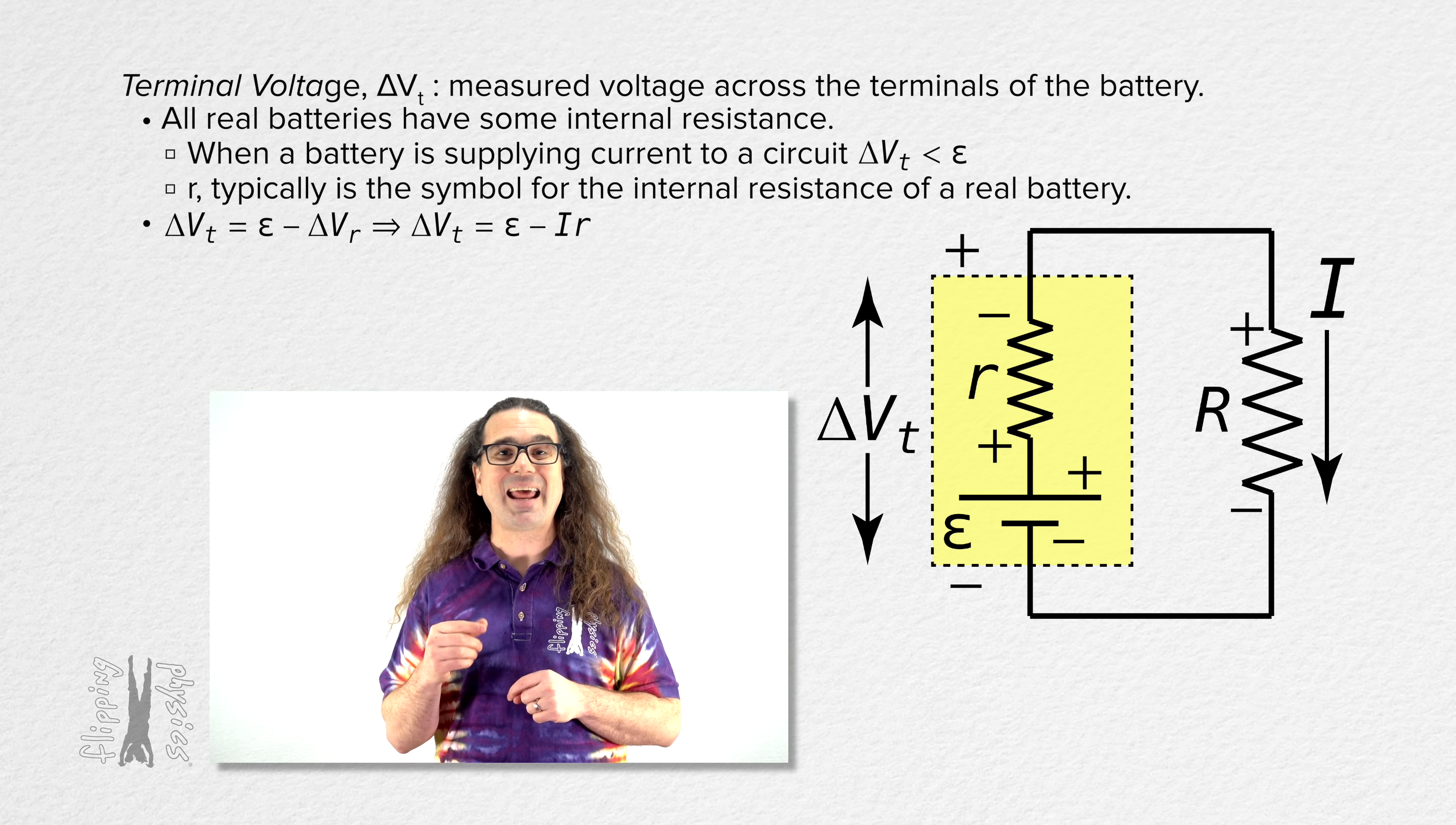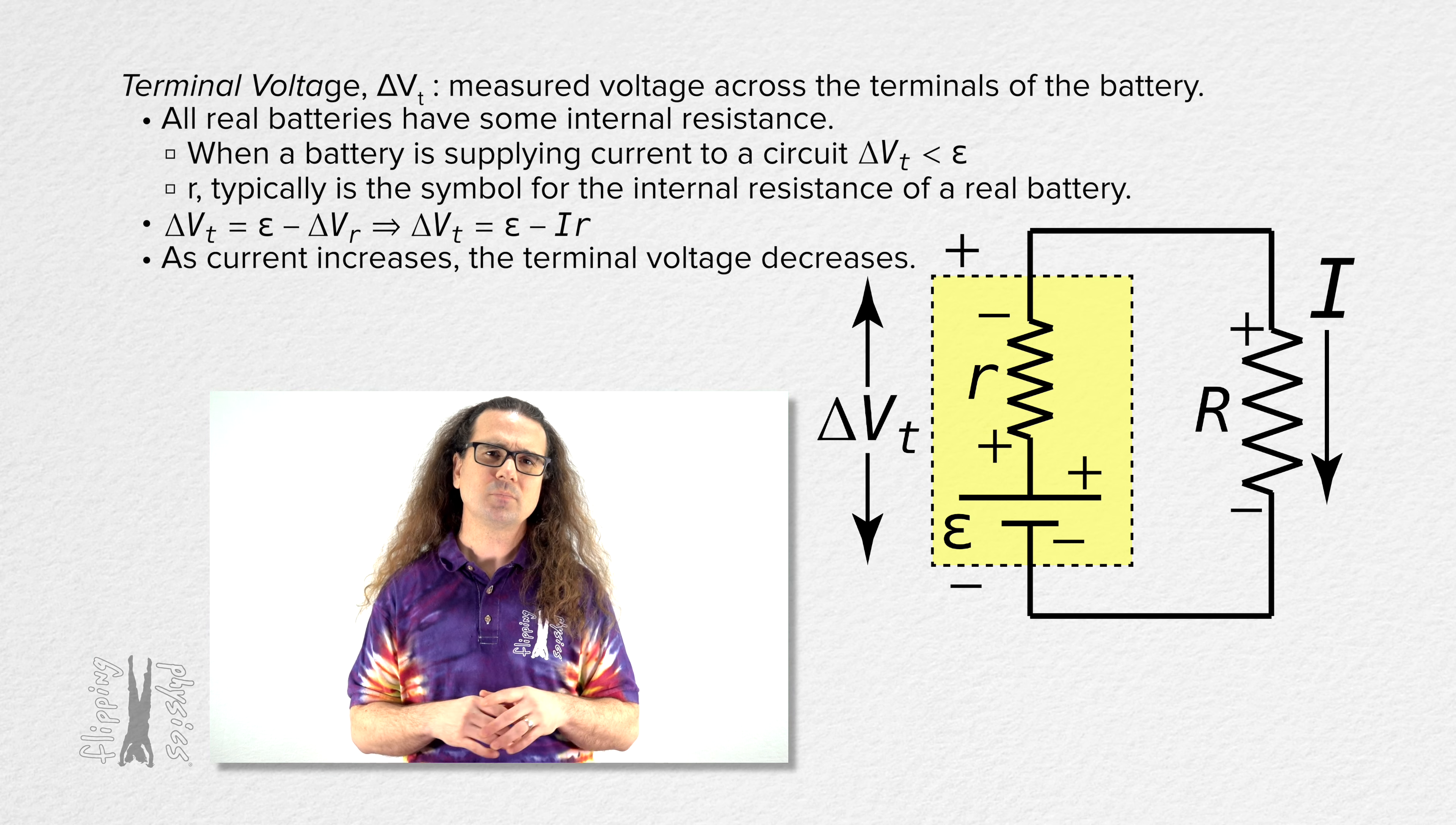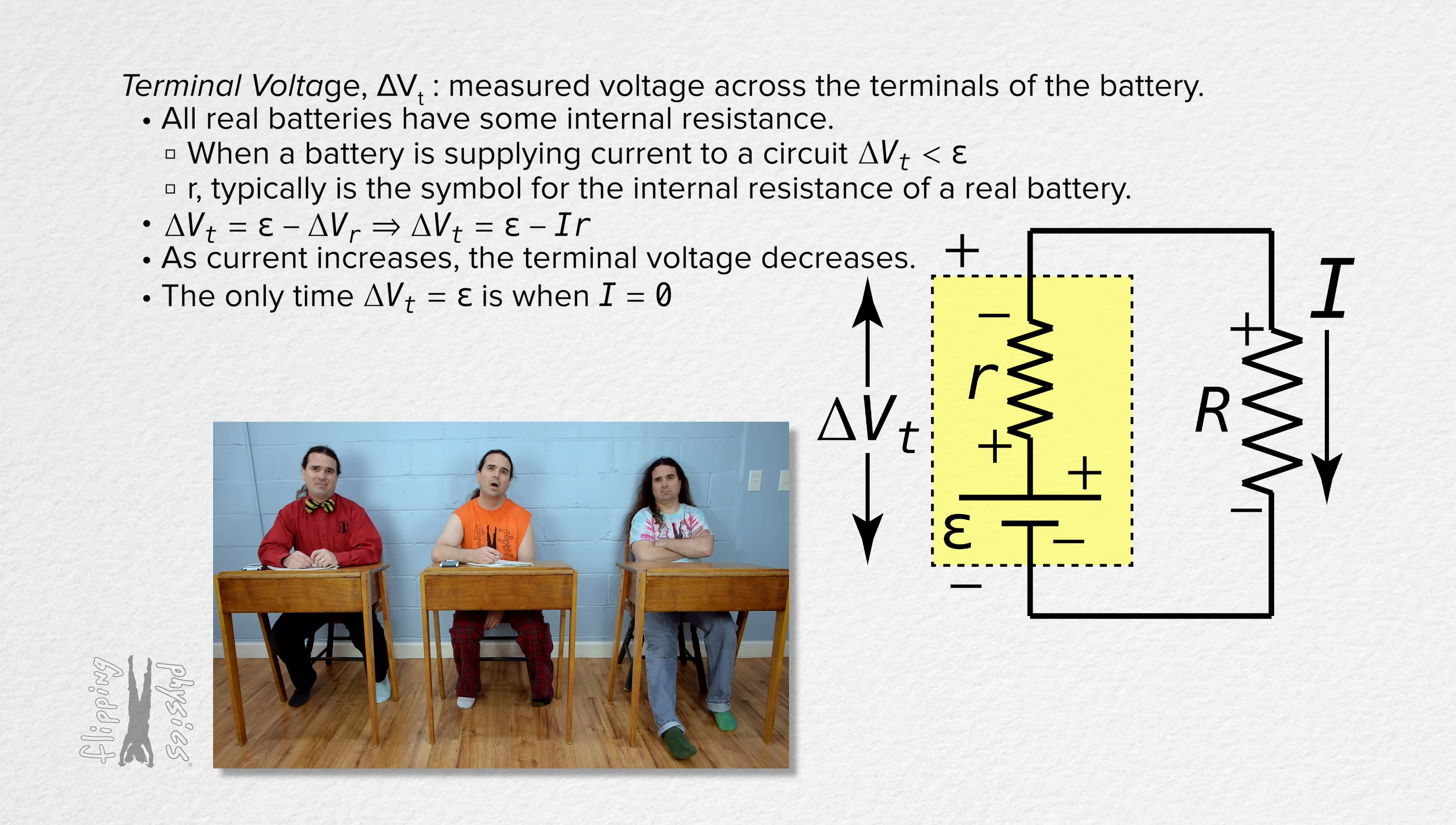Notice this means that as the current through a battery increases, the terminal voltage across the battery decreases. And the only way to get terminal voltage to equal EMF is to have zero current flowing through a battery.